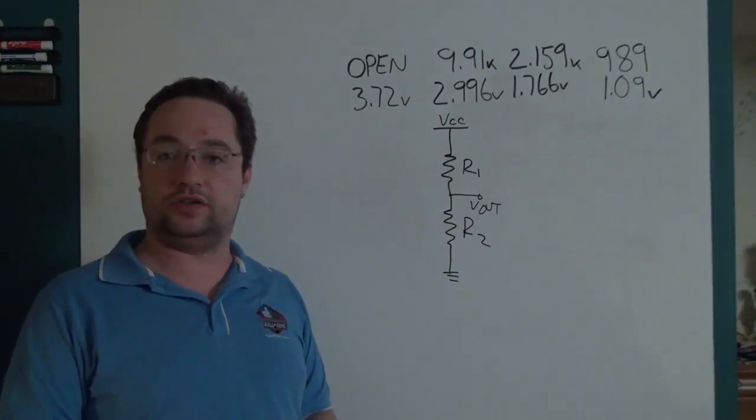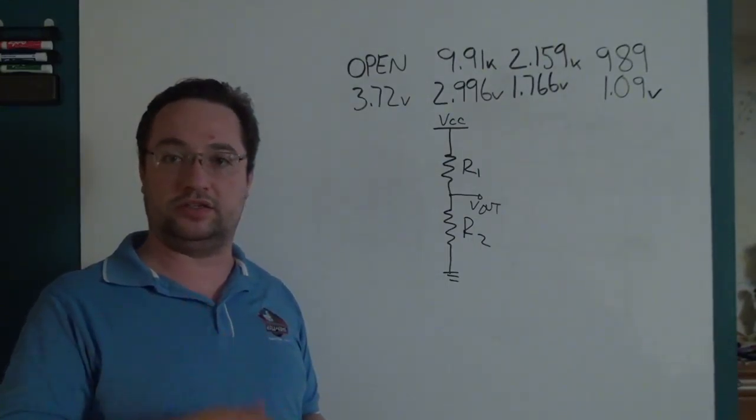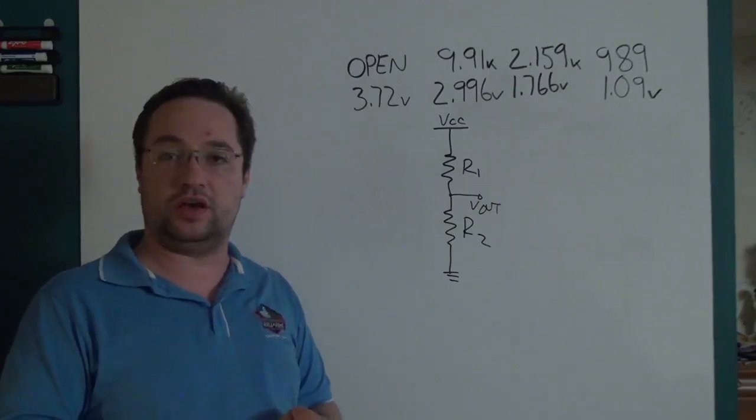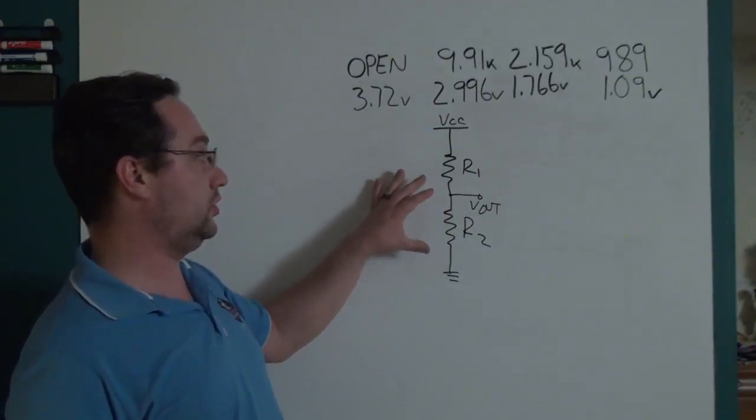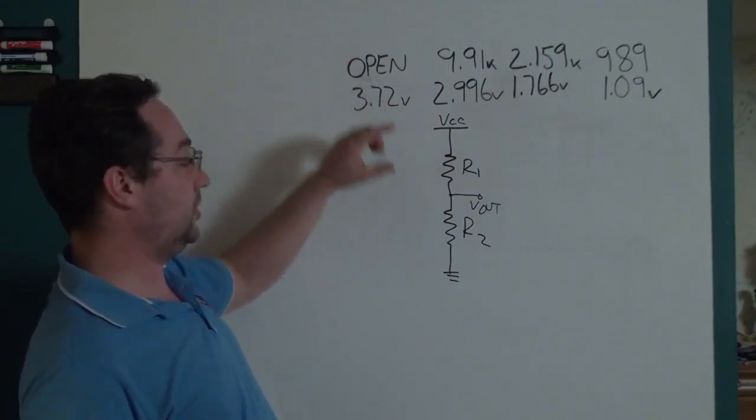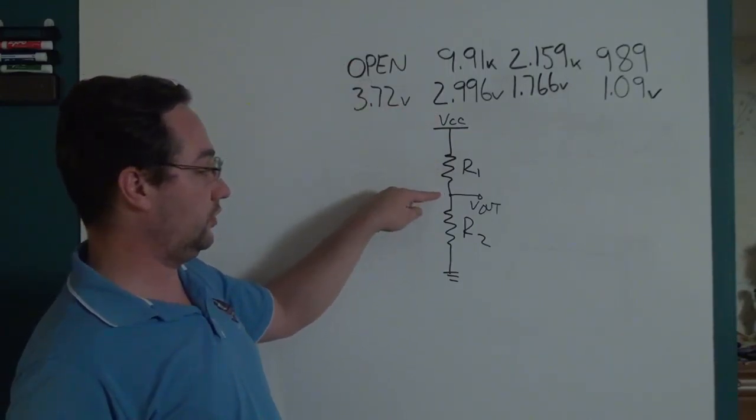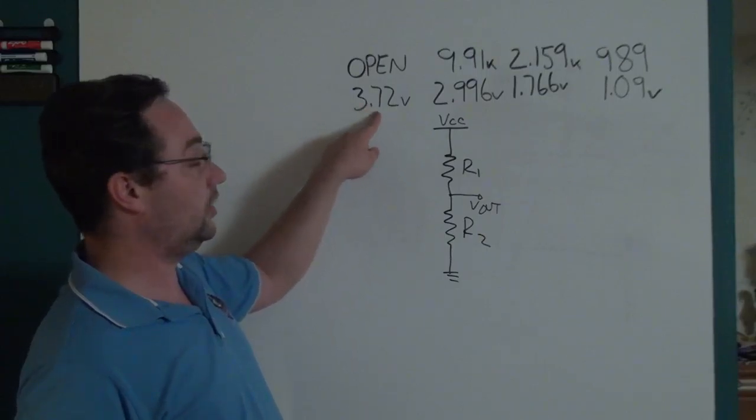So we can assume that when we're measuring the voltage from here to here, it's going to be open. Then as we swap out R2, R1 is the resistor that's inside the computer, we get a different Vout.